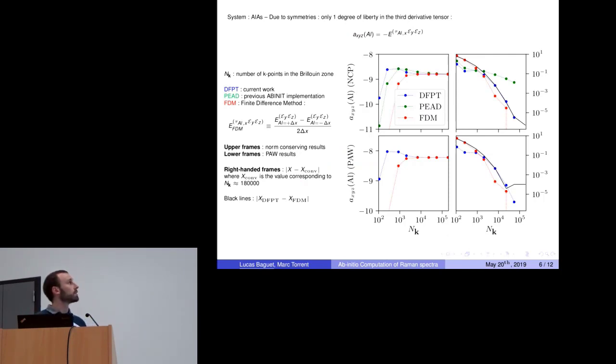To validate this implementation, I've done a test on aluminum arsenide. Here I present one tensor element of the third derivatives I computed. The higher frames show norm-conserving results. The lower frames show PAW results. The blue points are the new implementation. The green one corresponds to the previous implementation in Abinit. And red is the result obtained by finite difference method. All of these are with respect to the k-point grid.